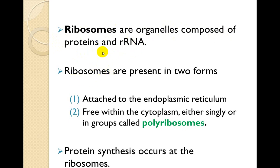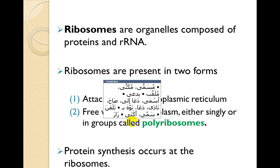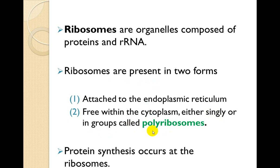Ribosomes are present in two forms. الريبوسومس موجودة بشكلين: الأول مرتبط بالشبكة البلازمية الخشنة (attached to the rough endoplasmic reticulum), والثاني free ribosomes في داخل السايتوبلازم — إما على شكل single ribosomes distributed in the cytoplasm، أو مرتبطة مع بعض على شكل سلسلة نسميها الـ poly ribosomes.